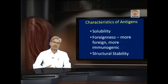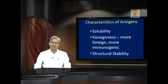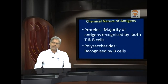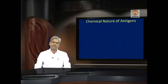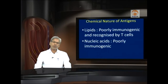Chemically, proteinaceous antigens are recognized by both T cells and B cells. Polysaccharides, when antigenic, are recognized only by B cells. Lipids are purely immunogenic and recognized only by T cell populations. Nucleic acids are very poor immunogenic substances. Let us now consider epitopes and paratopes. The majority of antigens are proteins. An epitope is that particular part of the antigen which reacts with the antibody, and a paratope is complementary — that part of the antibody which reacts with the epitope.